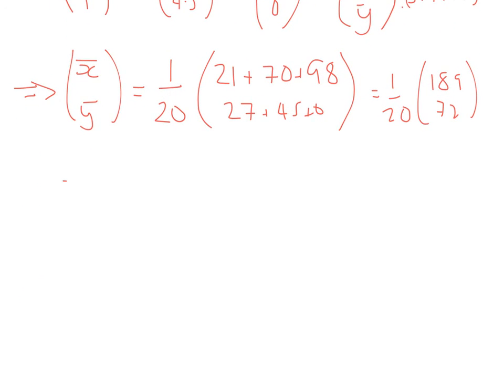Okay, so we actually wanted the coordinates of it, so it would be in this form. So it's going to be 189 over 20, because there's no way of cancelling that at all. So 72 divided by 20, they both have common factors, so then it would end up being 36 over 10, so 18 over 5. And those are the coordinates of the centre of mass of that object.